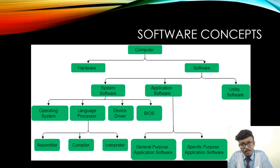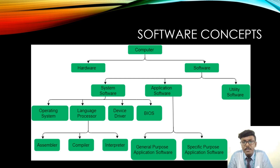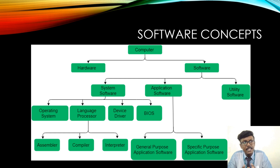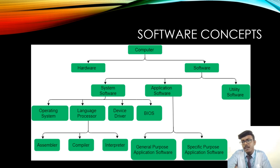Examples of general purpose application software include Microsoft Excel, used to prepare spreadsheets; VLC Media Player, used to play audio or video files; and Adobe Photoshop, developed by Adobe for creating photo animations. Specific purpose application software, as the name implies, is customized and mostly used in real-time or business environments — for example, ticket reservation systems, healthcare management systems, payroll management systems, and hotel management systems.